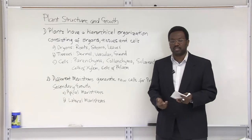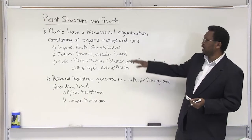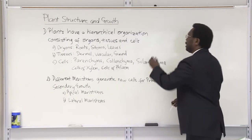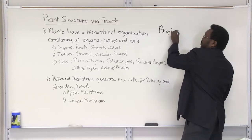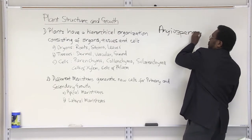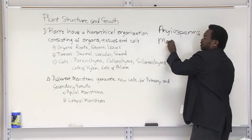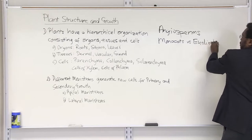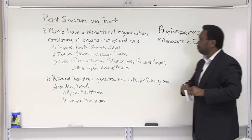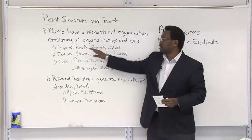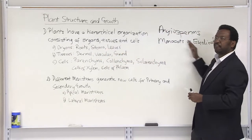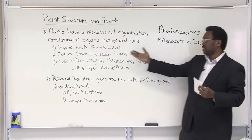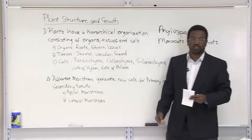Those are the organs within the plant: roots, stems, and leaves. As we look at these, we're going to talk specifically about the flowering plants today, which are known as angiosperms. You have two categories of angiosperms: monocots versus eudicots. We'll look at the difference in organization of monocot versus eudicot flowering plants in terms of these organs.